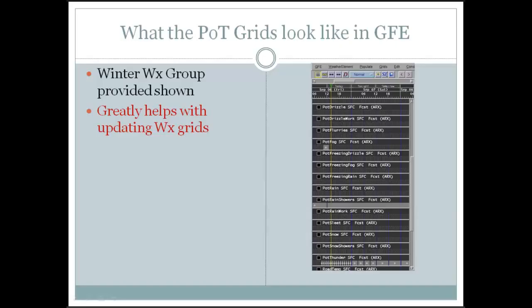Let me show you what these probability type grids look like in GFE. You don't need a grid in every element — I've got one here showing for fog, one for rain showers, and one for thunder. In this framework, if I just need to adjust where the fog is in the weather grid, I don't need to touch the rain showers or the thunder. I just go in and tweak the fog grid and merge it. Or if I don't need the fog anymore, I just delete it and merge — it's all done. This helps both during the shift and going from shift to shift, giving the next forecaster more information about what the previous forecaster was thinking.